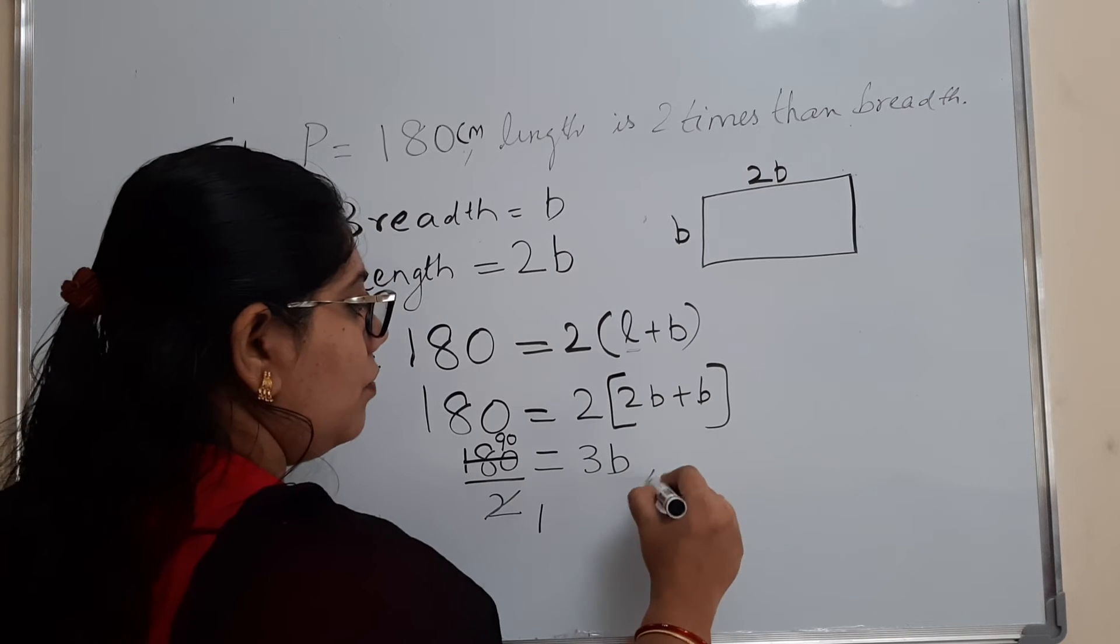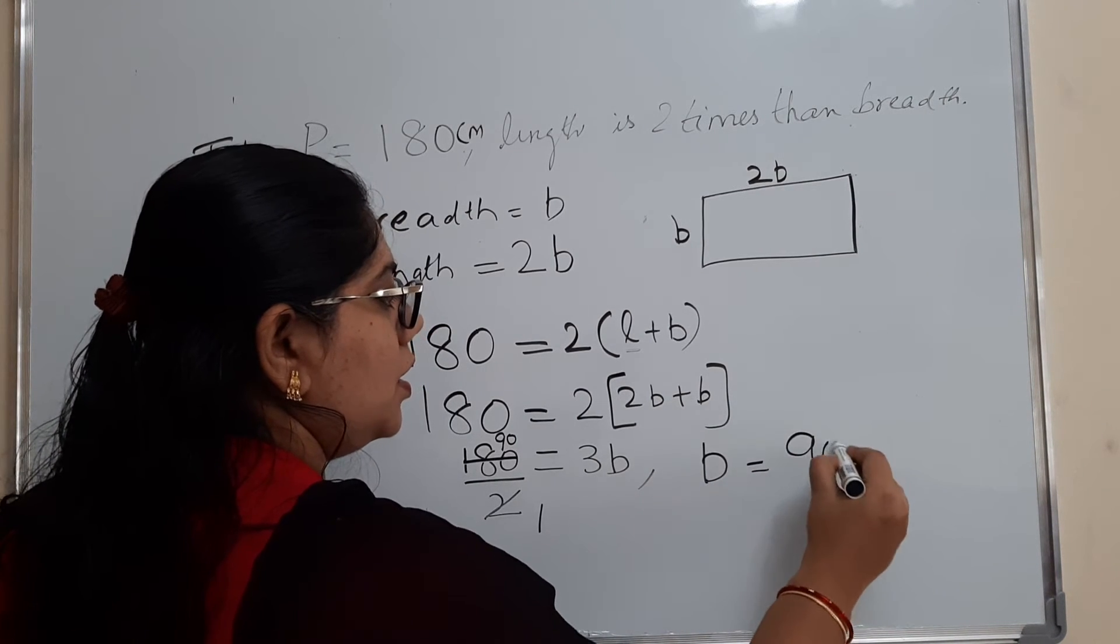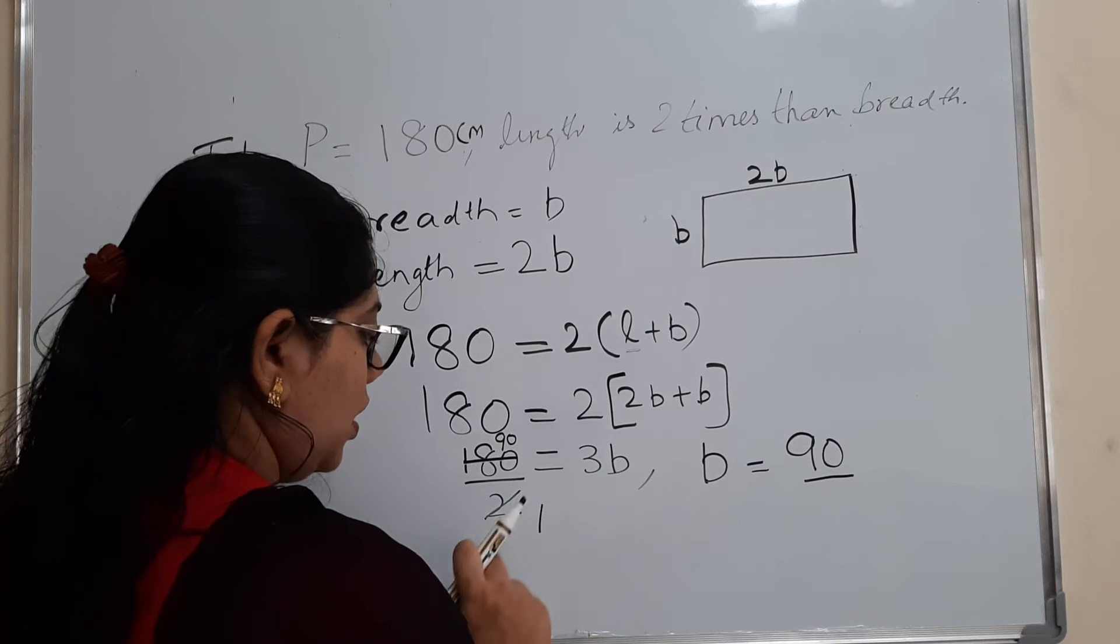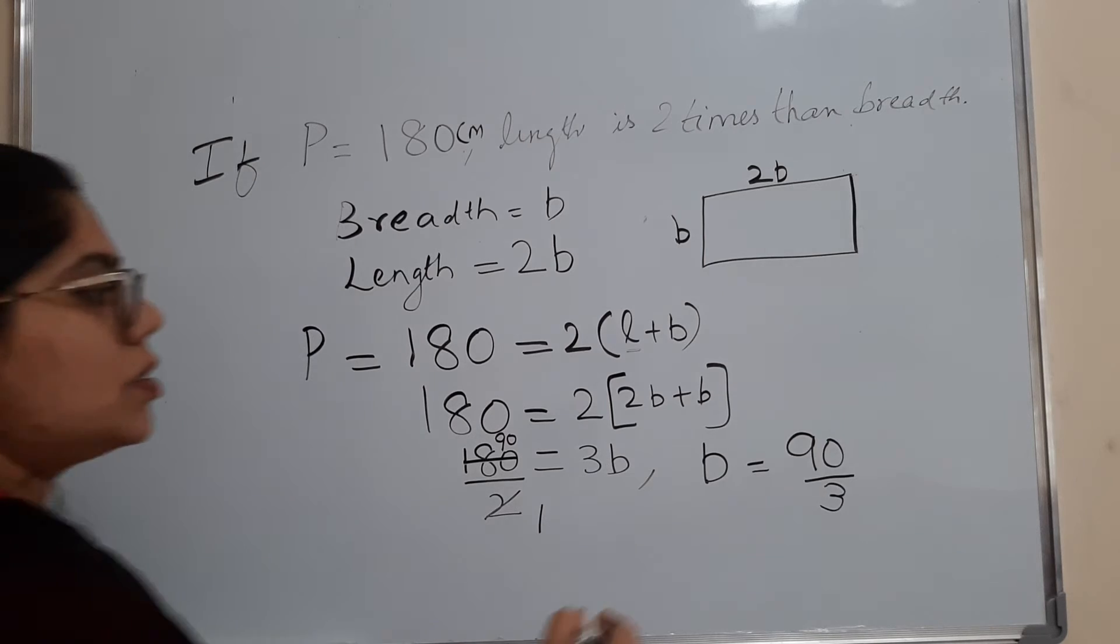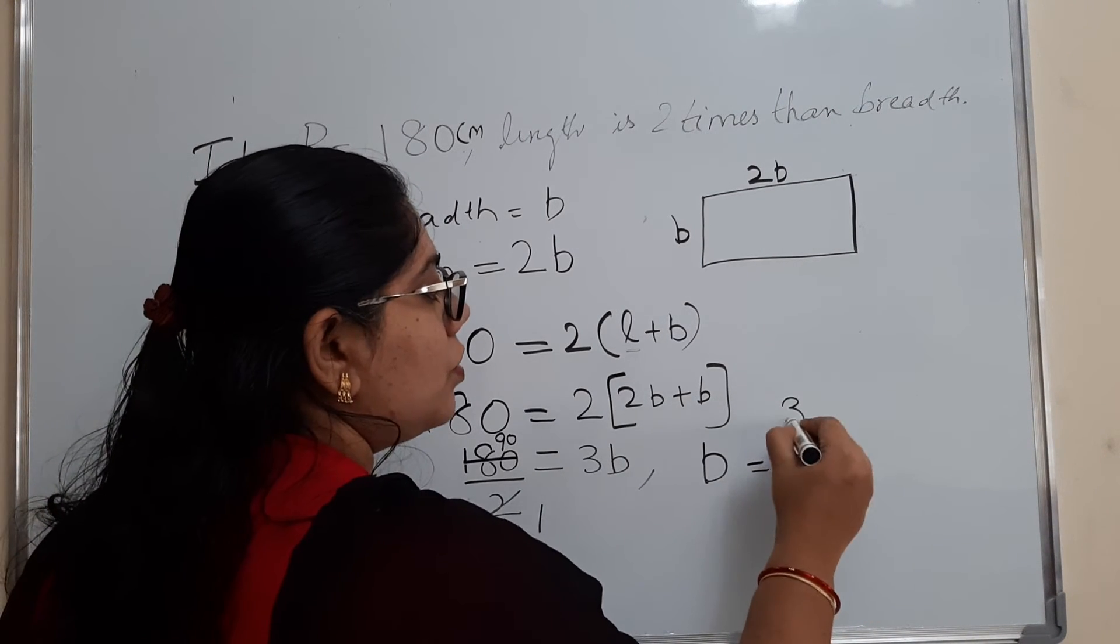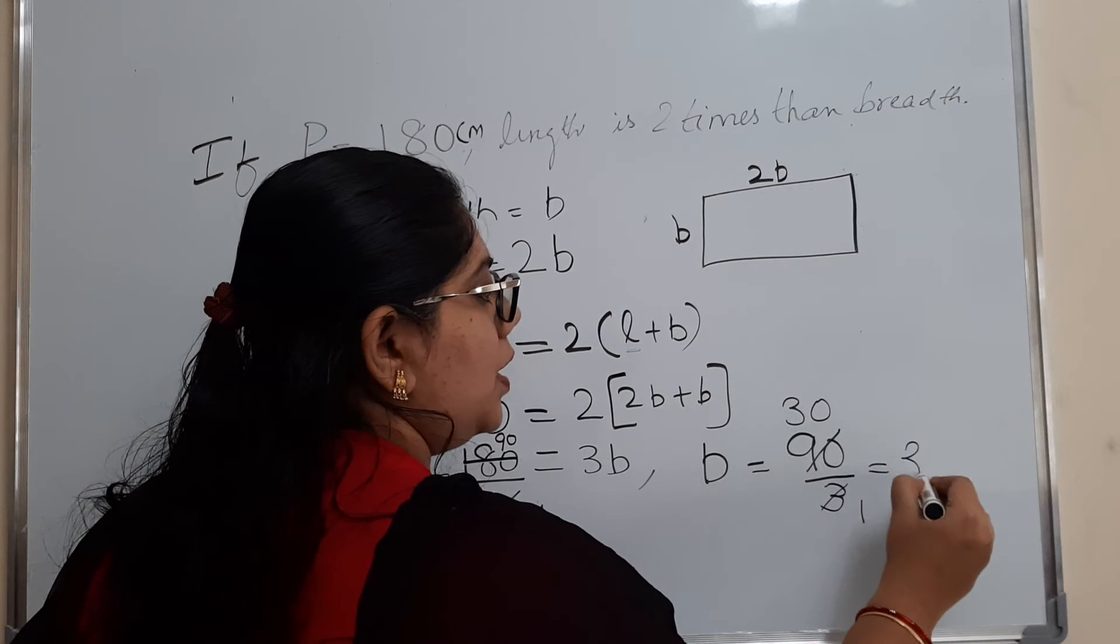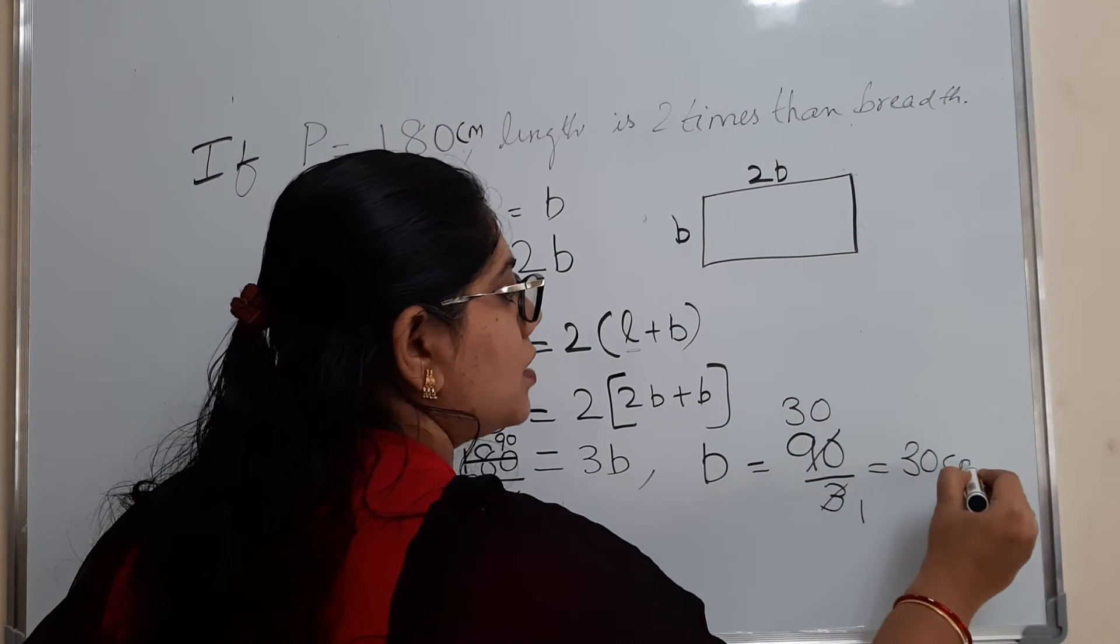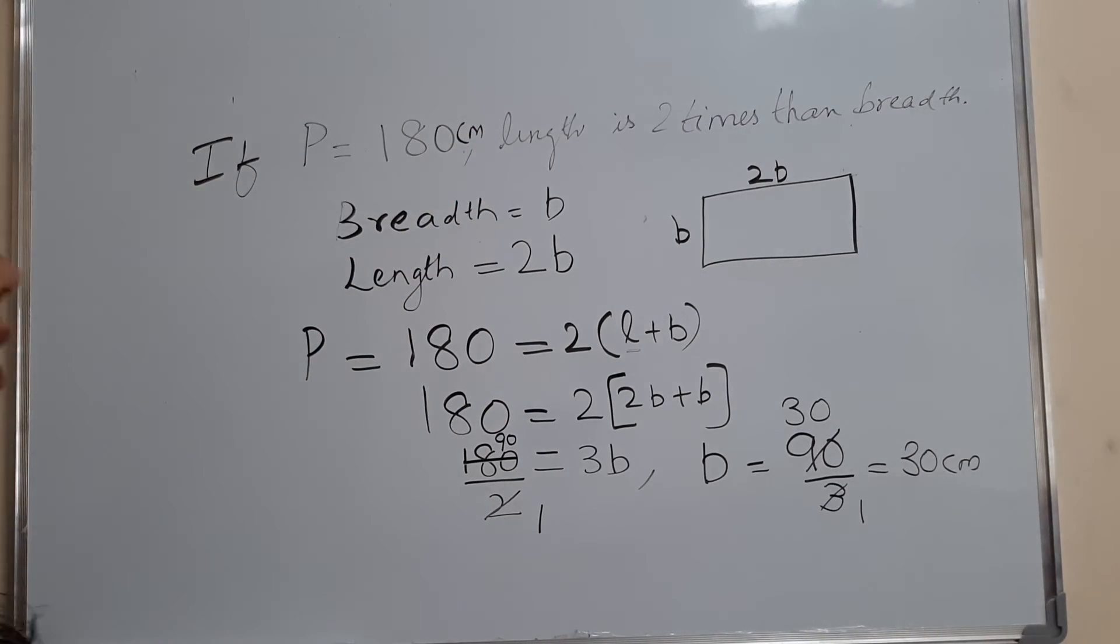In the next step we want to find B. B is equal to 90 divided by 3, this 3 will go down. So 90 divided by 3. So here when you divide, 3 into 3 is 9, 9 minus 9 is 0, 0 into 3 is 0. So B is 30 centimeters, because the unit given is centimeters.